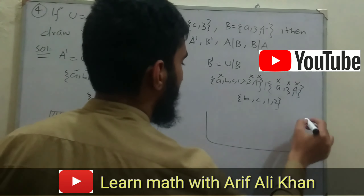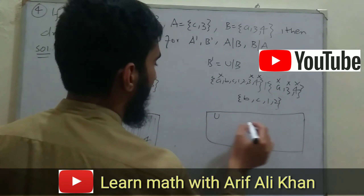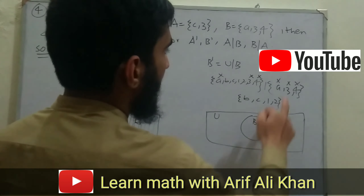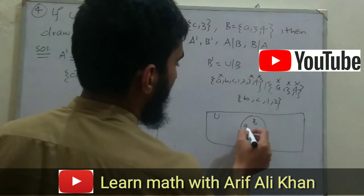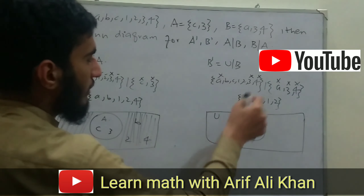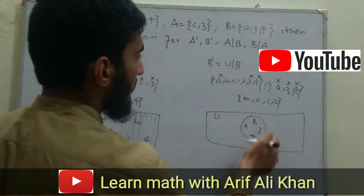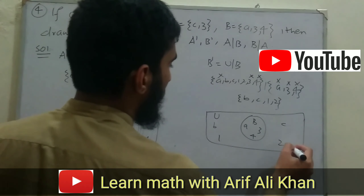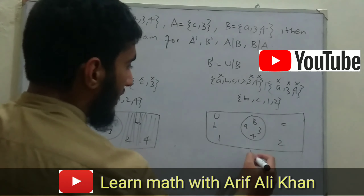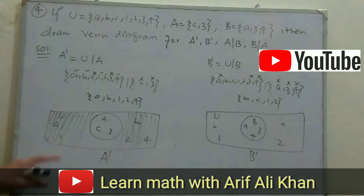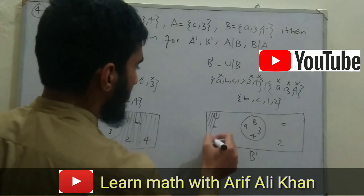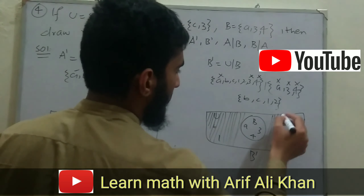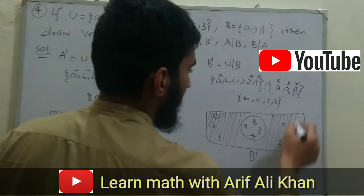Now we represent B complement with a Venn diagram. Draw a rectangle for the universal set and a circle for set B. The common elements A, 3, and 4 are placed inside circle B. The remaining elements B, C, 1, and 2 go outside circle B in the universal set. We shade the area outside set B — the universal set region — to represent B complement.